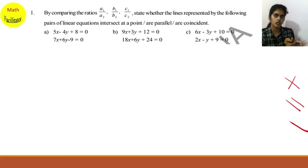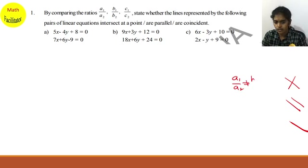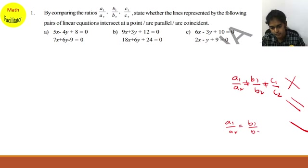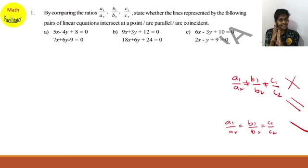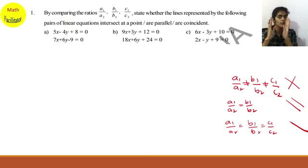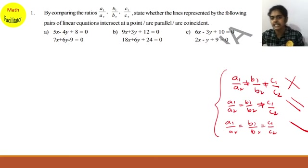We have learned that if a1/a2 is not equal to b1/b2, then the lines are intersecting lines. If a1/a2 equals b1/b2 equals c1/c2 — all three ratios are equal — then the lines are coincident lines. If only two ratios are equal, meaning a1/a2 equals b1/b2 but c1/c2 is not equal, then the lines are parallel.